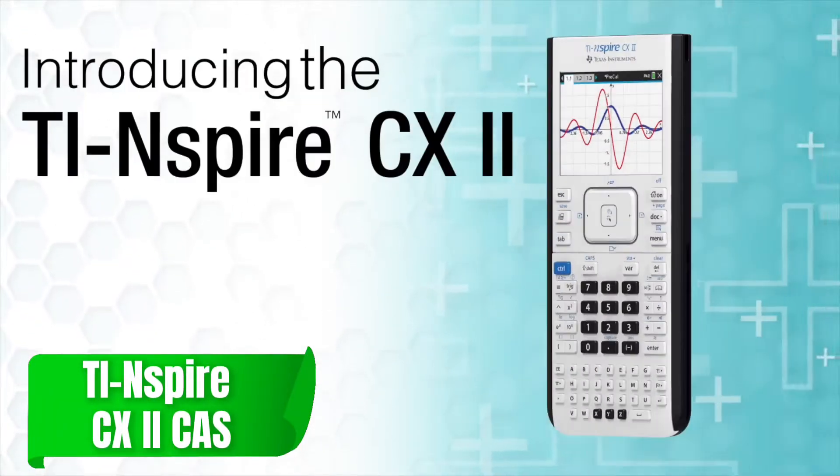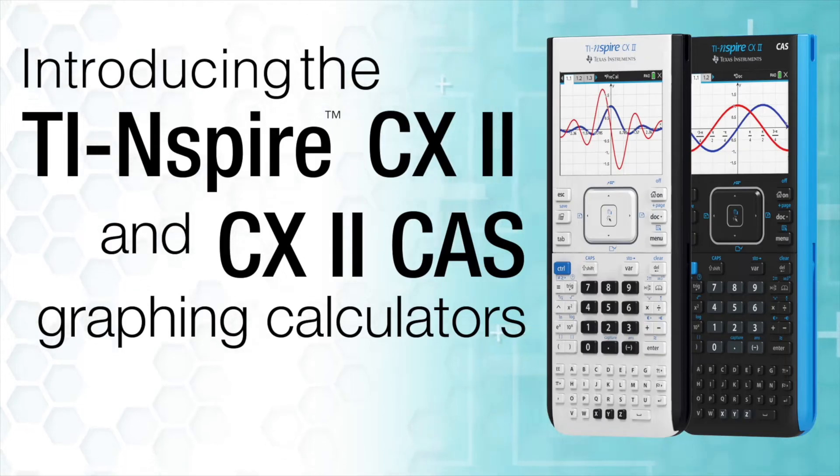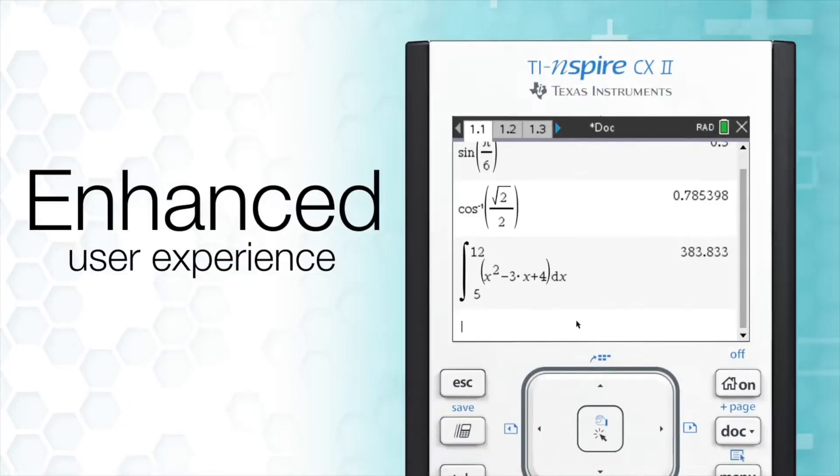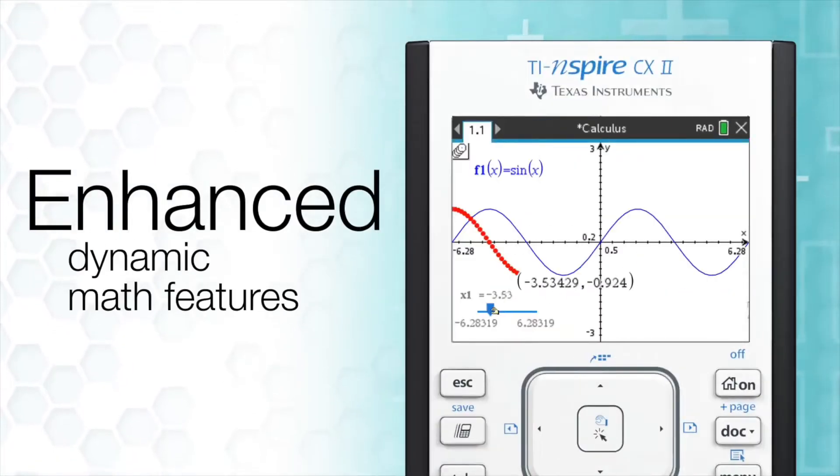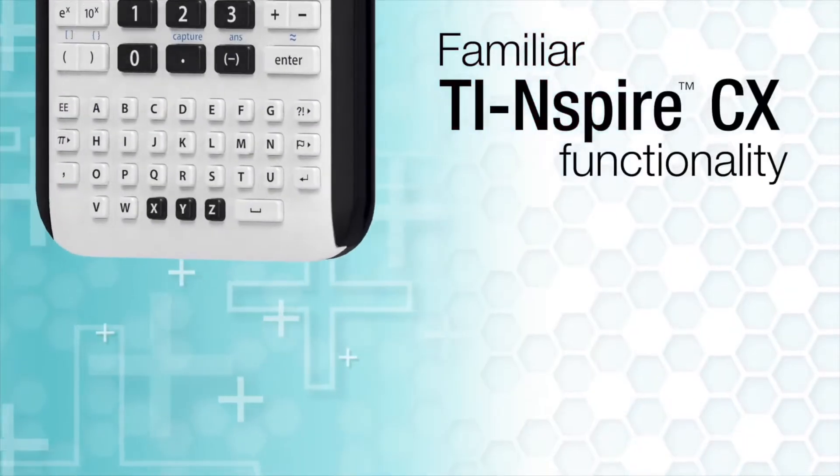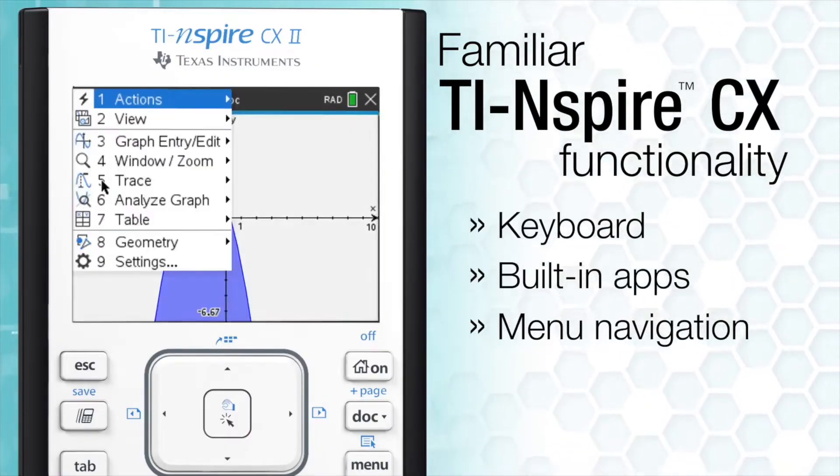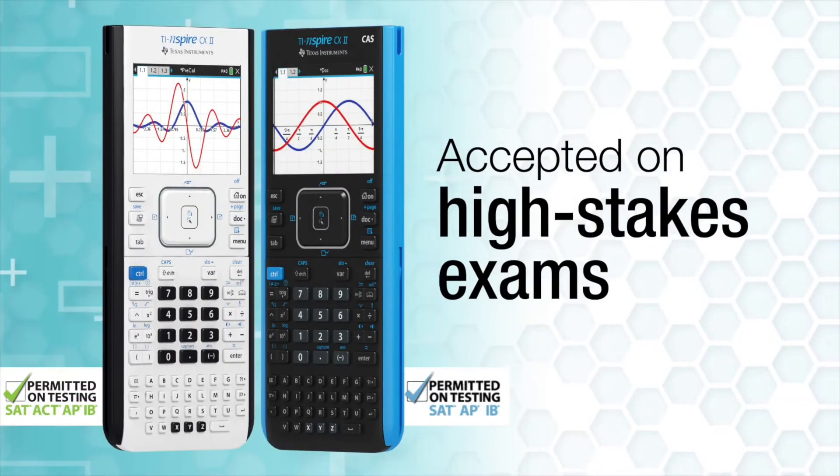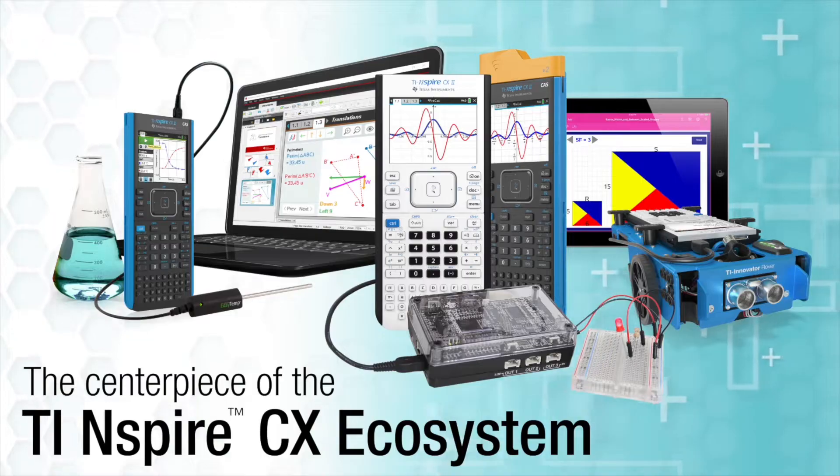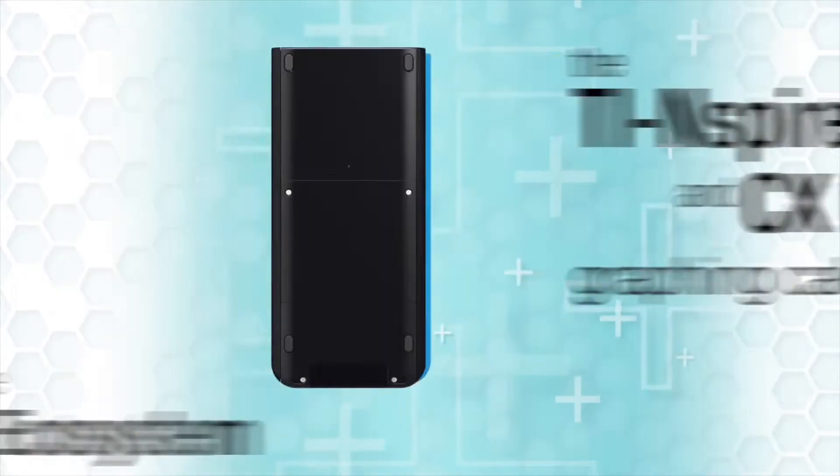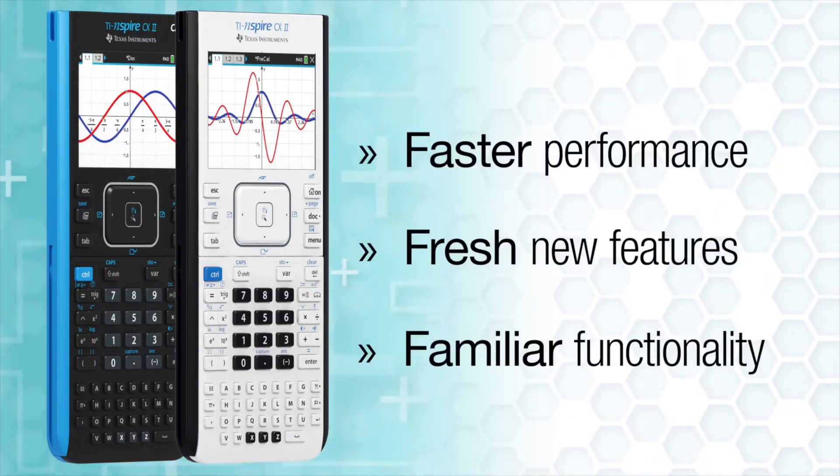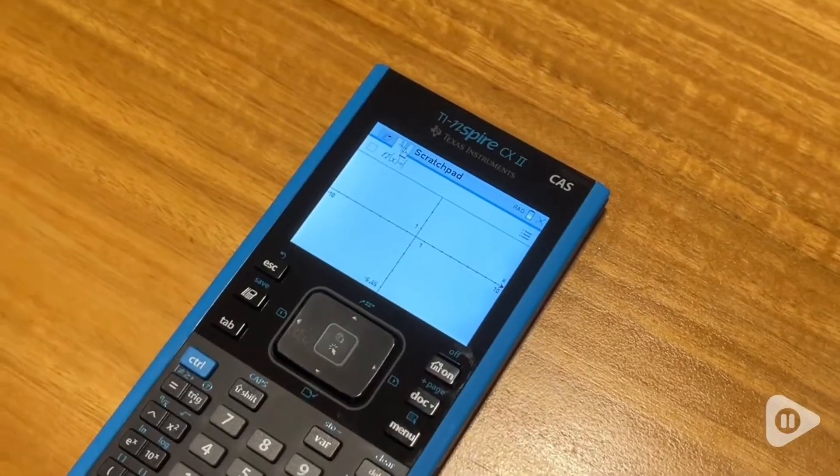Next up, number two, the TI-Inspire CX II CAS, built with one of the most advanced computer algebra systems CAS on the market. This calculator excels at symbolic manipulations like simplifying expressions, solving systems of equations, and even performing complex integrations. With its real-time dynamic graphing capabilities, you can adjust variables and instantly see how they impact the graph, which is incredibly useful for engineers working in fields like civil engineering, where data modeling and structural analysis play a crucial role. With features like this, it's easy to see why this calculator is a favorite among professionals and advanced students alike.